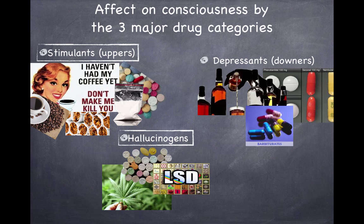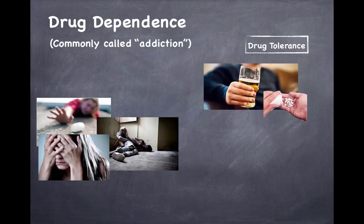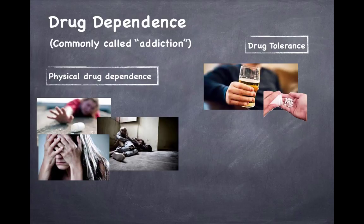Drug dependence is the compulsive pattern of drug use where the user develops a drug tolerance coupled with unpleasant withdrawal symptoms when the drug is discontinued. Factors that influence the addictive potential of drugs include how quickly effects are felt, how pleasurable the effects are, how long the pleasurable effect lasts, and how much discomfort is experienced when the drug is discontinued.